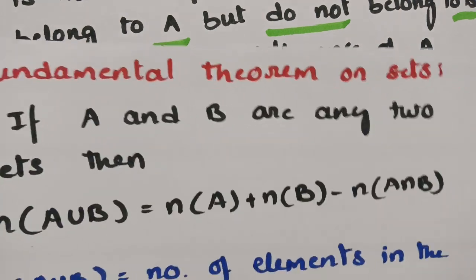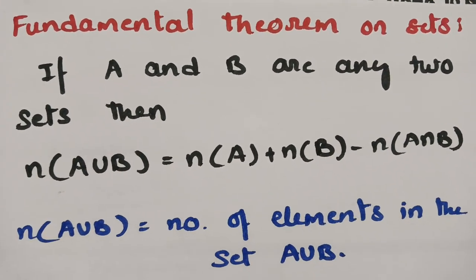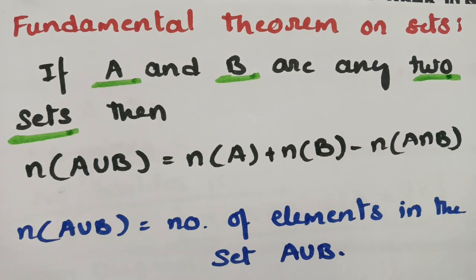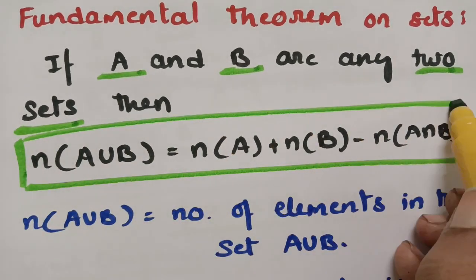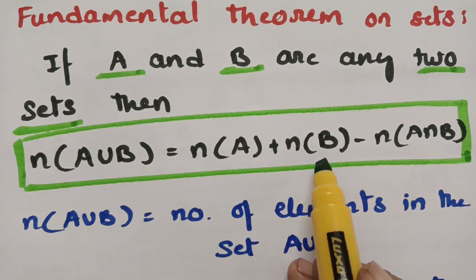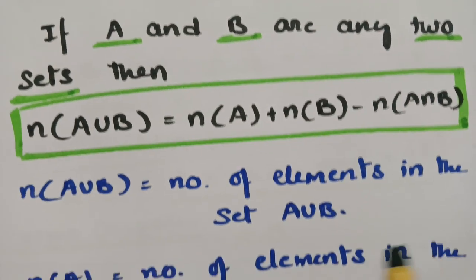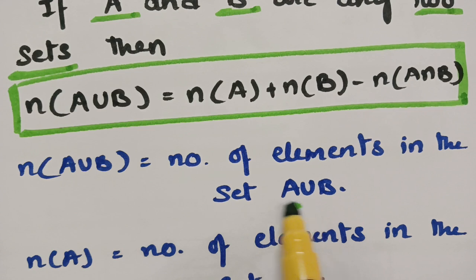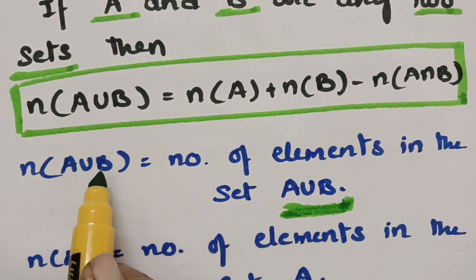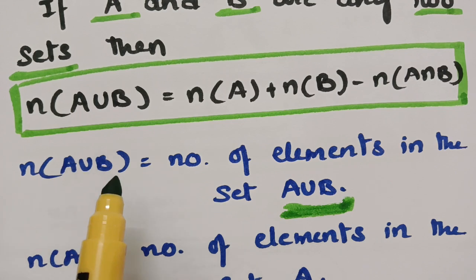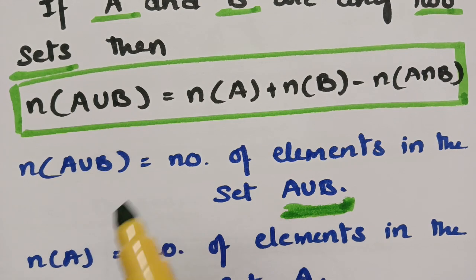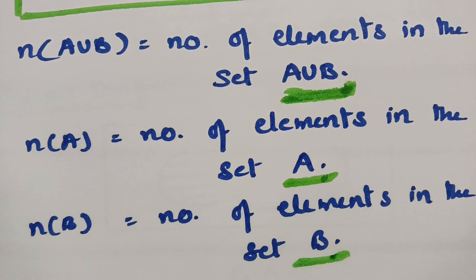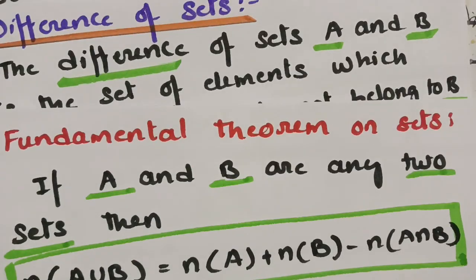The next thing is the fundamental theorem on sets. If A and B are two sets, then N(A ∪ B) = N(A) + N(B) − N(A ∩ B). Here, N(A ∪ B) means the number of elements in the set A ∪ B — that is, the cardinal number of A ∪ B. N(A) is the number of elements in set A, and N(B) is the number of elements in set B.